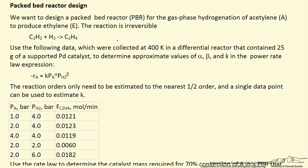In this problem we want to design a packed bed reactor for a gas phase reaction — hydrogenating acetylene to ethylene — and we're given reaction data that was obtained in a differential reactor. A differential reactor means that the conversion is small so that we can assume the concentration is essentially uniform throughout the reactor bed, and this makes analysis of the rate data easier.